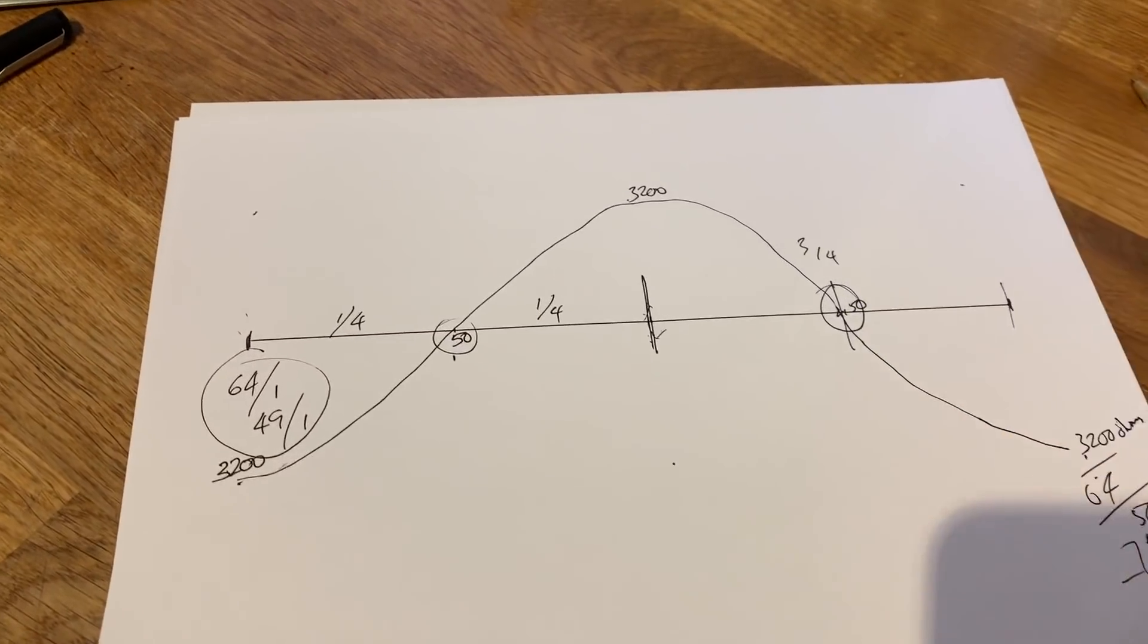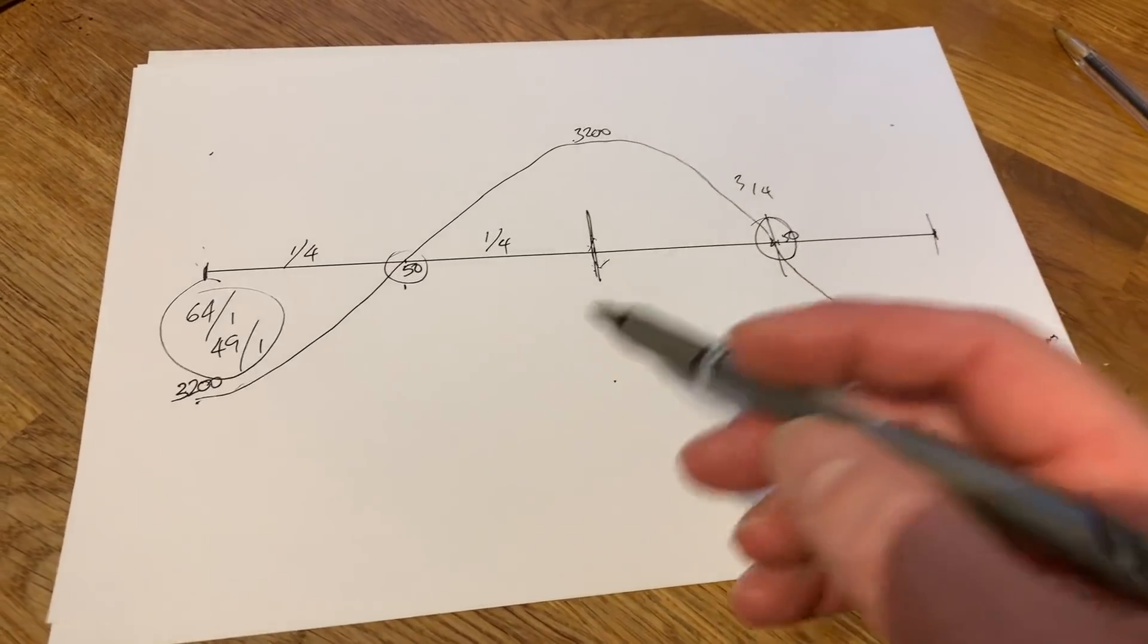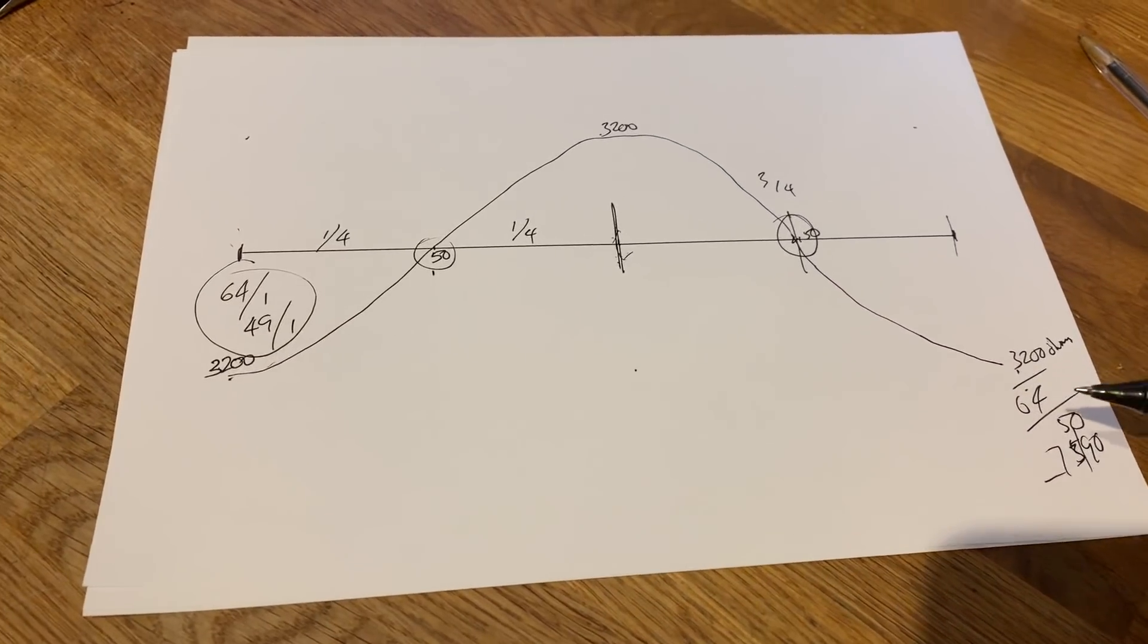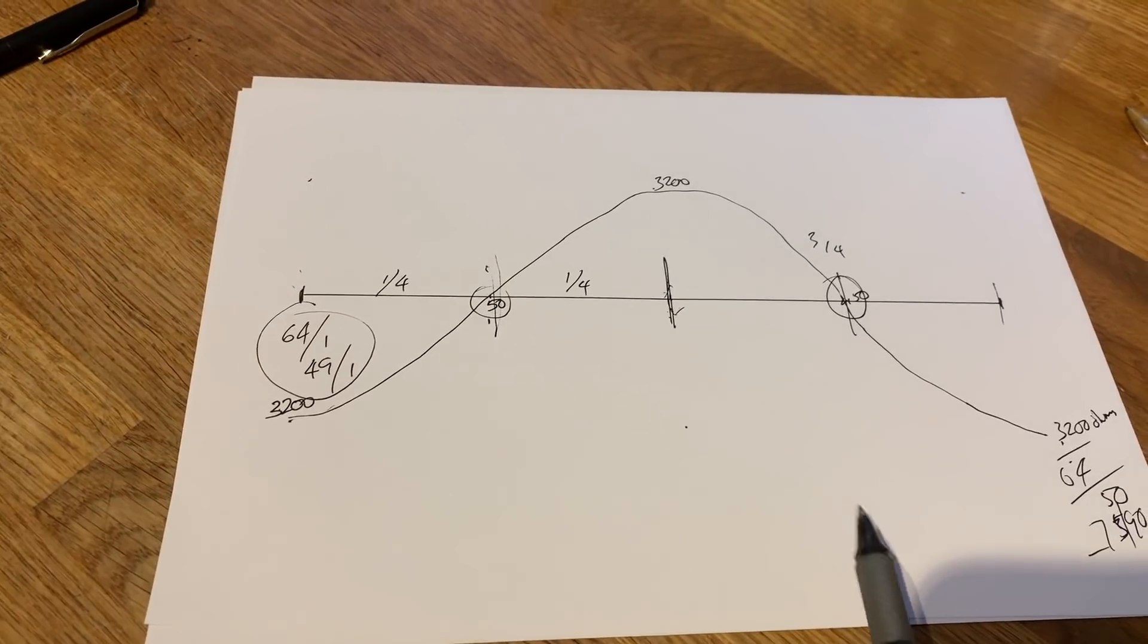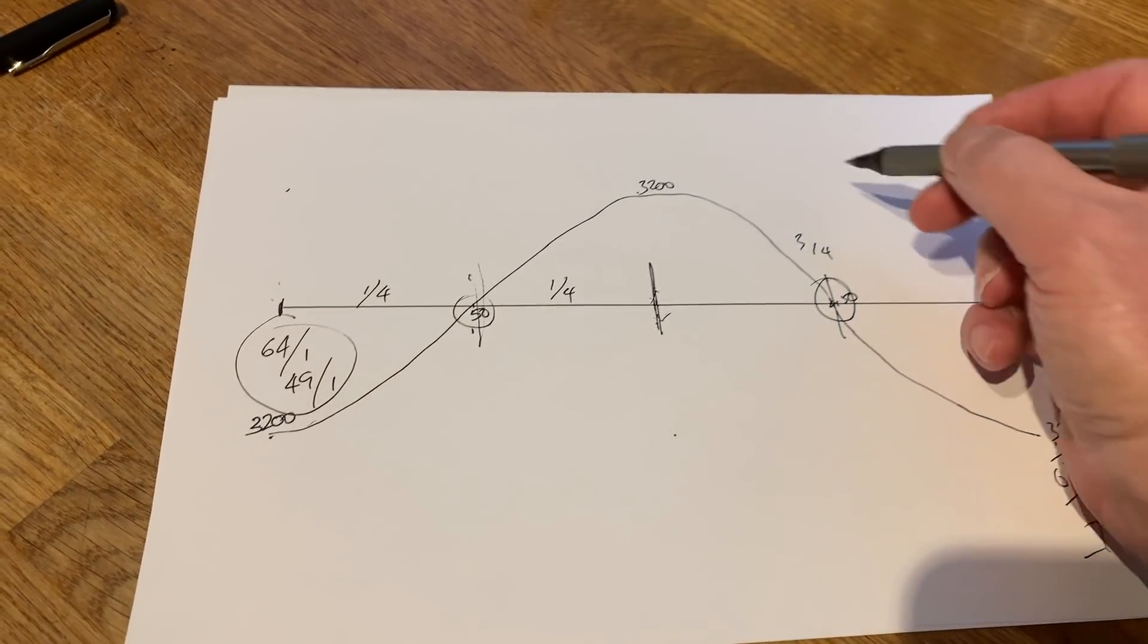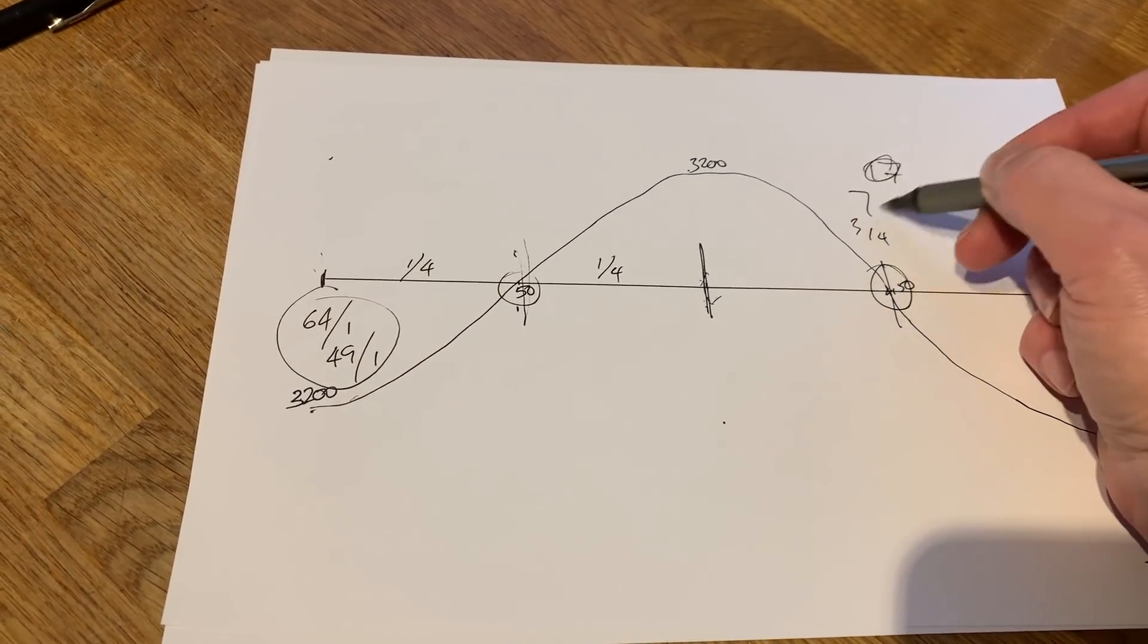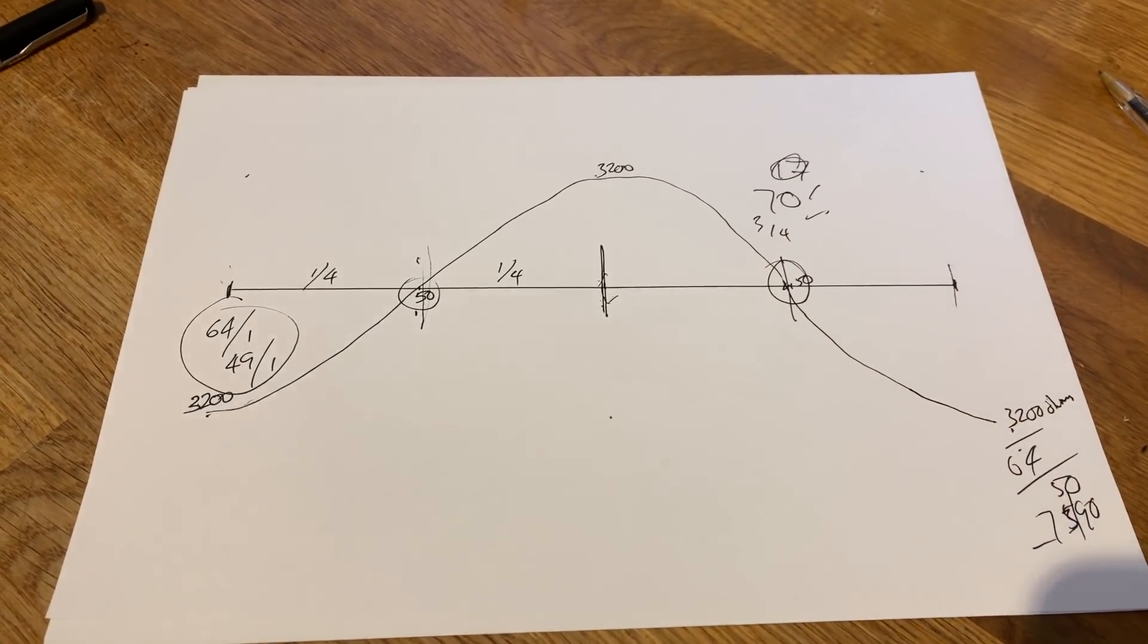But getting back to our two meter antenna, why we can use it on two and 70 centimeters is because a quarter wavelength on two meters is a three-quarter wavelength on the 70 centimeter band. I hope that's understandable.